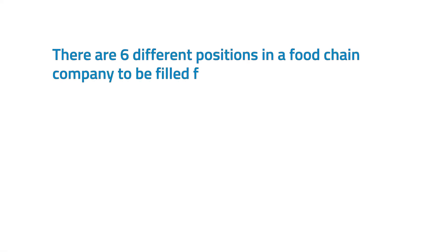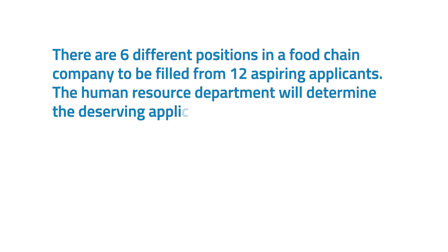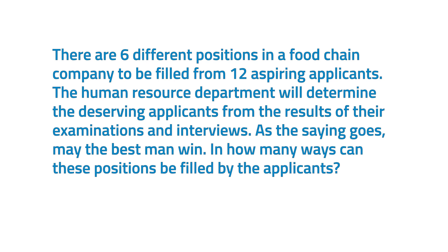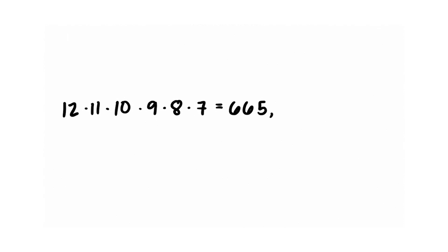There are six different positions in a food chain company to be filled from 12 aspiring applicants. The Human Resource Department will determine the deserving applicants from the results of their examinations and interviews. In how many ways can these positions be filled by the applicants? Using the permutation formula, we have 12 × 11 × 10 × 9 × 8 × 7 = 665,280 ways. There are 665,280 ways the positions can be filled by the applicants.